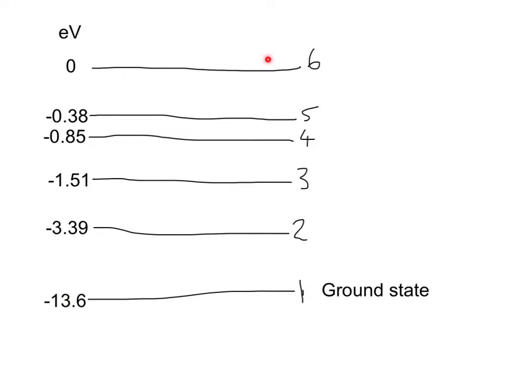The highest energy level, number six, is actually when the atom has been given enough energy for the electron to leave the atom entirely — a process known as ionization. What this energy level shows us is how much energy we'd have to give the atom from its ground state to cause ionization, so the atom would actually lose an electron.